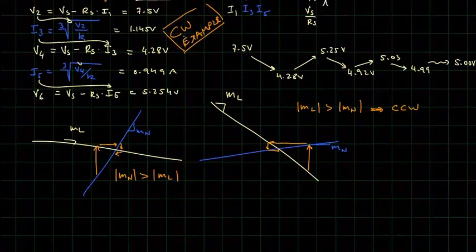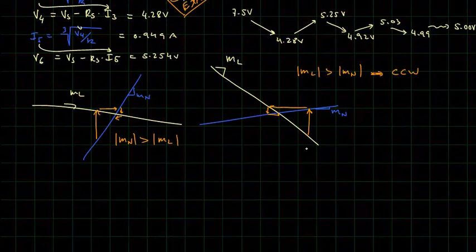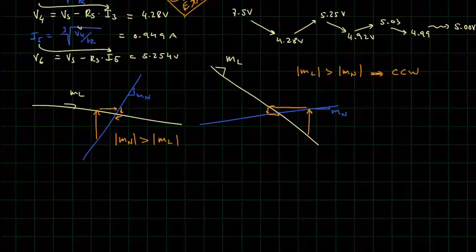So what would going counterclockwise look like? We would start with an I1, where we would assume an I1, and then we would calculate a voltage based on that. And so our voltages would be computed from the nonlinear element.